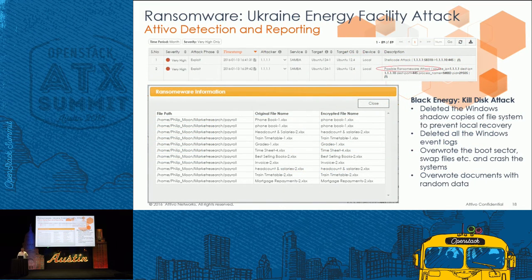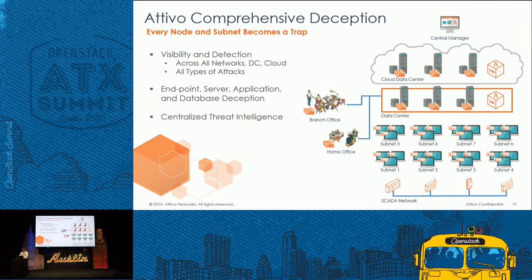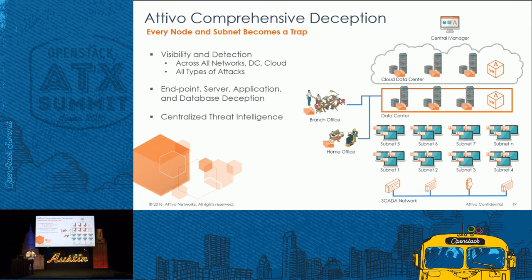This is actually the ransomware that Black Energy — the Ukraine energy sector attack — used. We ran it on our system and you can see the output. So basically what we do is turn the whole network into a trap. We turn your endpoints, your data center, your devices, local data center, cloud — it doesn't matter. We turn every asset you have into a trap that helps you close that window of opportunity and find infected systems and backdoors on your network.